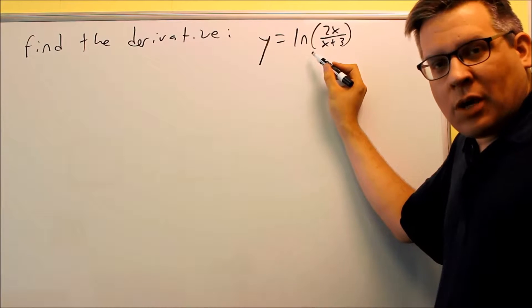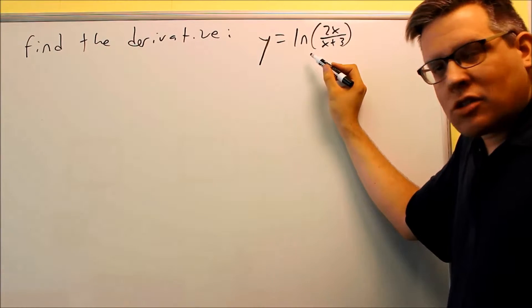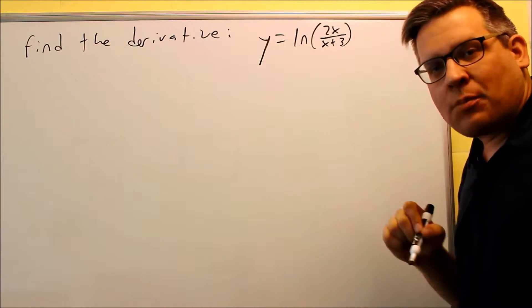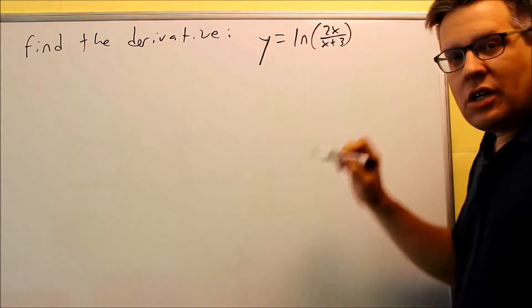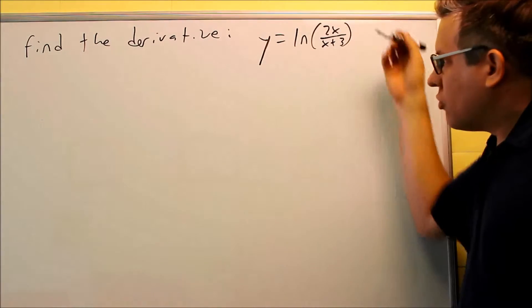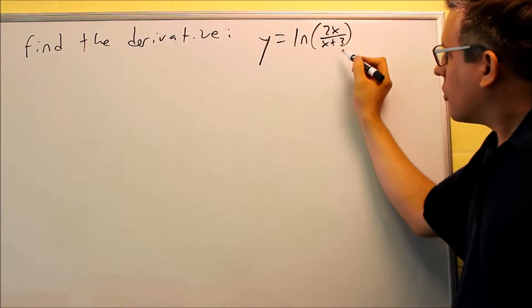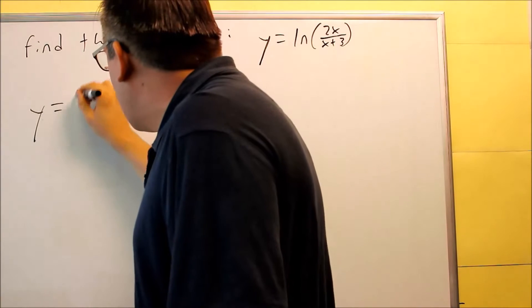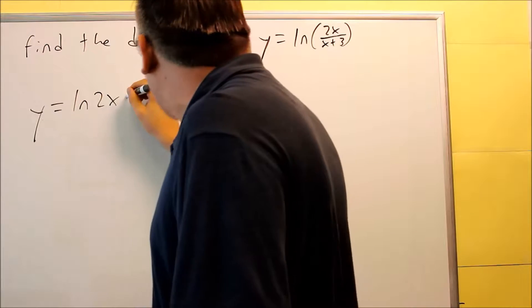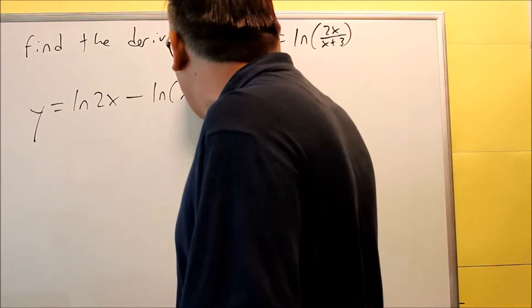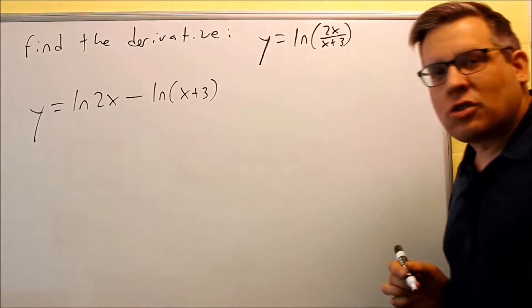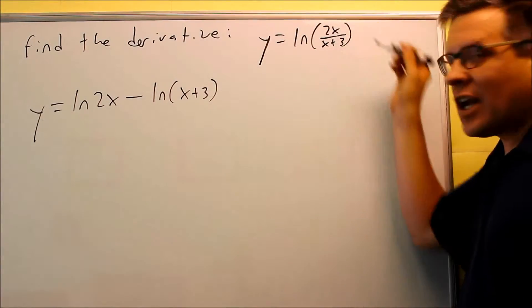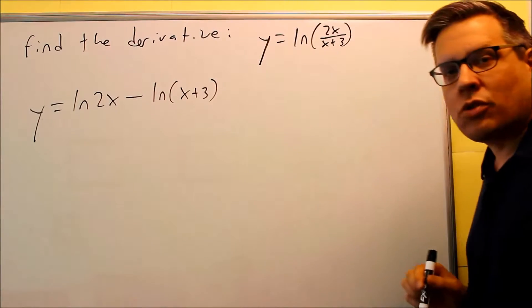So the reason why we talked about the logarithm rules at the beginning of this section is because we can make this problem a lot easier by using log properties instead of trying to do chain rules and quotient rules and things like that. So what we're going to do first is we're going to separate this. We're going to rewrite that problem as ln(2x) minus ln(x+3). We're going to split it apart, and you can do that because when you're dividing something, it turns into a subtraction with log properties.